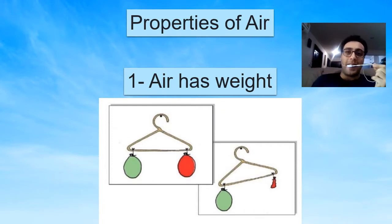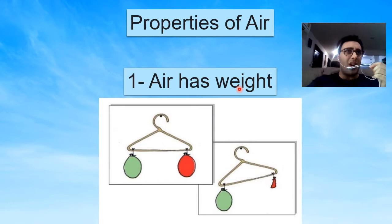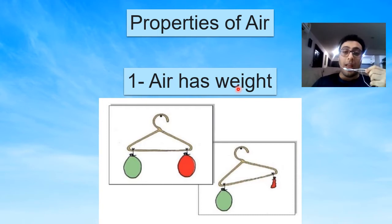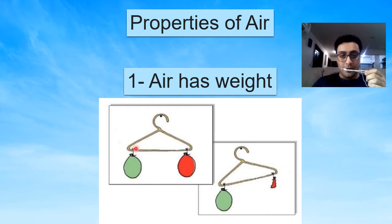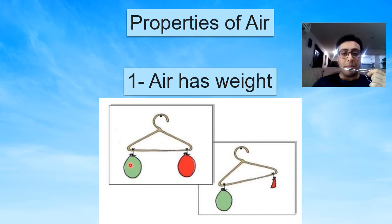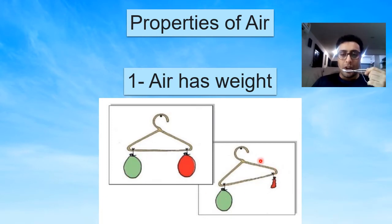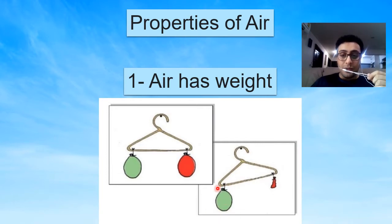Now let's talk about properties of air. Number one: air has weight. You're going to be like, "Teacher, air is all around us, I don't feel it. How does it have weight? It's not heavy." That's true, but remember — it's not heavy or light, but it has weight. You can do this experiment at home: use a hanger or any stick, put two balloons next to each other and blow exactly the same amount, or just empty balloons. Now fill one balloon with air and make it bigger than the other one. You're going to see that the hanger will tilt to the side of the balloon with air inside, because the air inside has weight. So this balloon is heavier than this balloon. You can do this experiment at home.